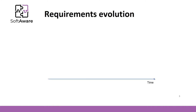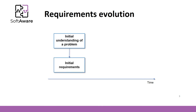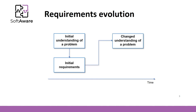I'll show a simple illustration of the requirements management evolution process. In the beginning, we have an initial understanding of the problem. Based on this, we create initial requirements. In the system development process, they may change our understanding of the problem. That's why we have to change or edit the initial requirements. In this way, requirements evolve together with the software until the software is discontinued.